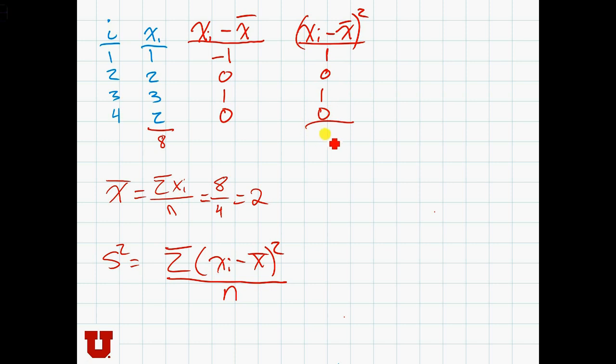When we sum that up, we get 2. This should be n minus 1, because we've got the sample variance. So we divide by n minus 1. N is 4, so we divide by 3. And we have that the variance of the sample is 2 thirds.